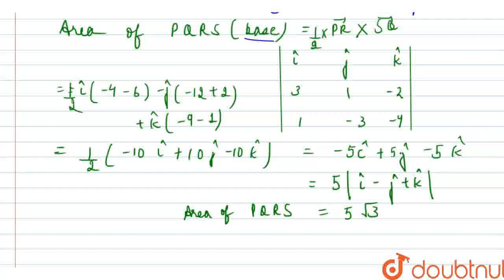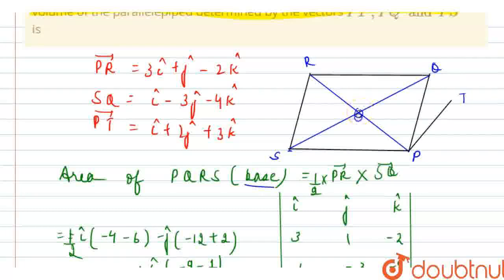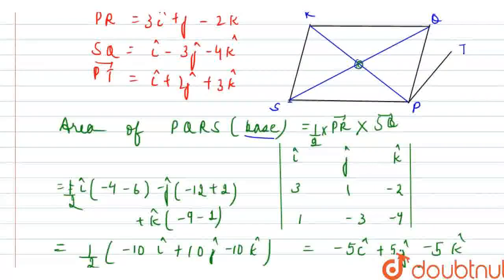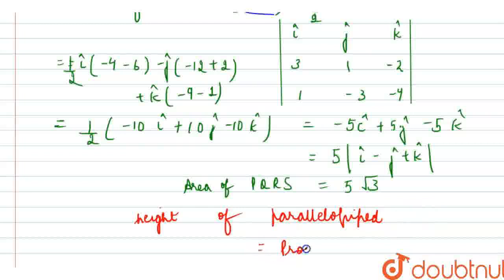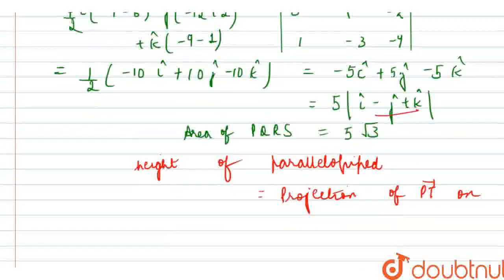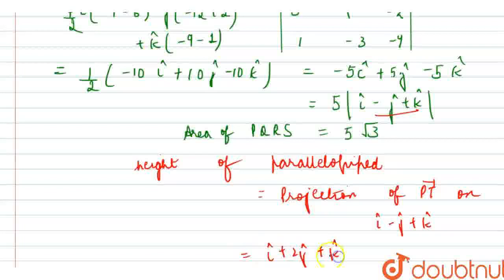Now we have found the area and we need to find the volume of the parallelepiped. We have found a vector perpendicular to both SQ and PR — it points in the outward direction. To find the height, we take the projection of PT vector onto this perpendicular vector found by the cross product of PR and SQ. The height of the parallelepiped is equal to the projection of PT vector on i-cap minus j-cap plus k-cap. The vector PT is i-cap plus 2j-cap plus 3k-cap.